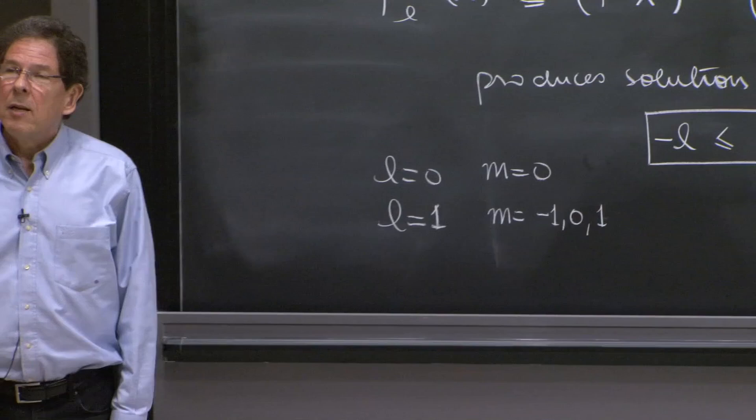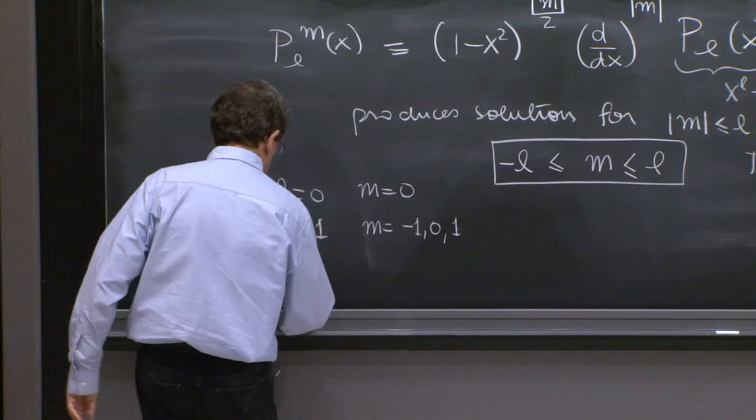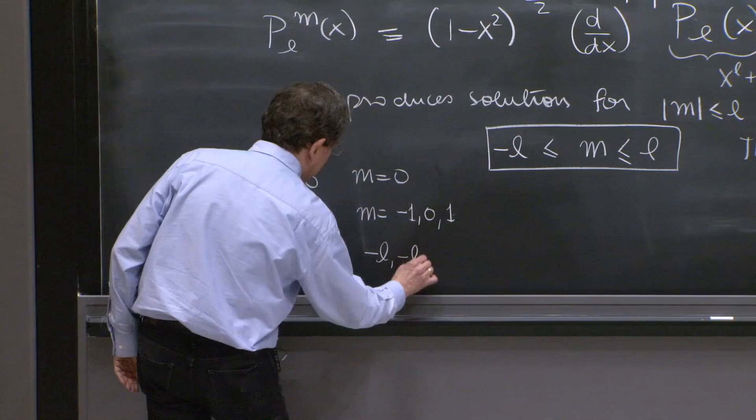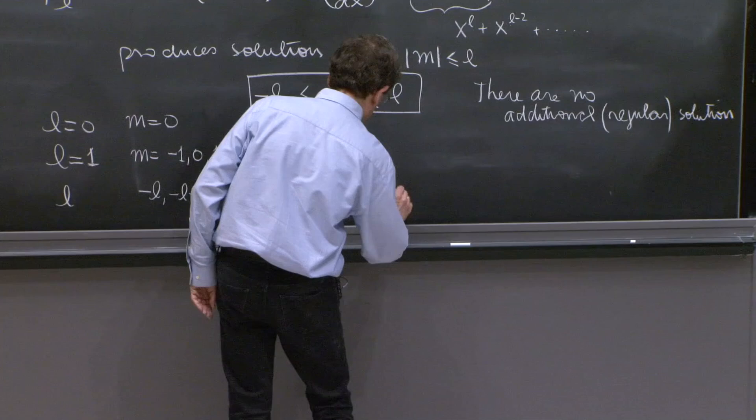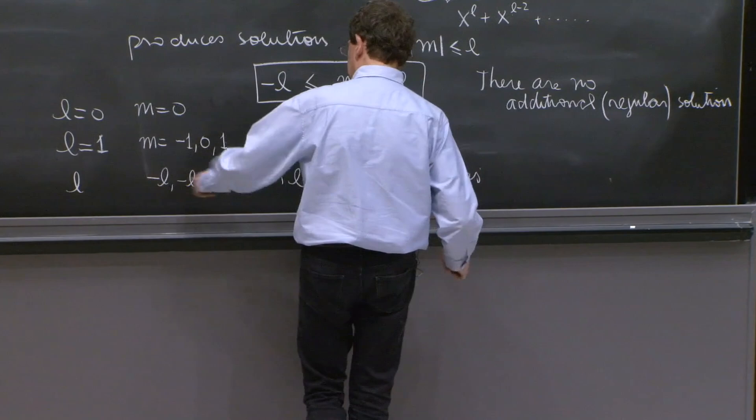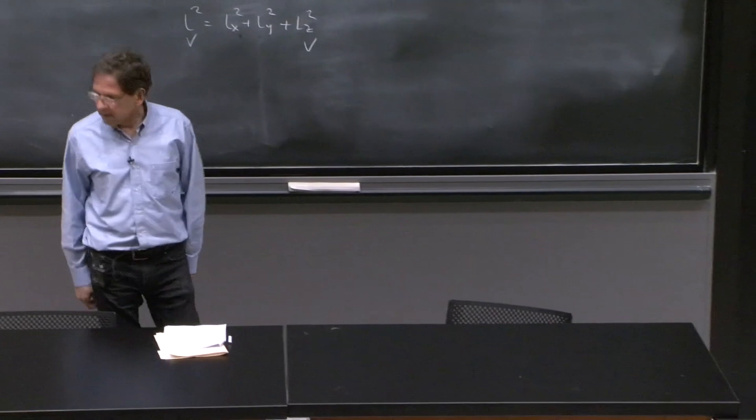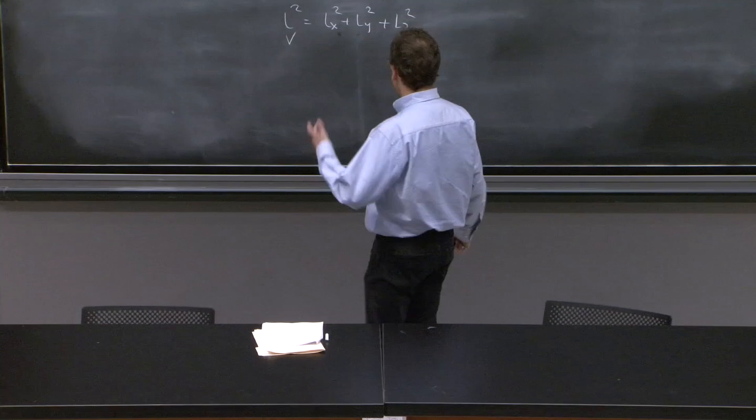So in general, when you choose a general l, you go from, if you choose an arbitrary l, then m goes from minus l minus l plus 1 all the way up to l. Now, these are all the values, which are 2l plus 1 values. 2l and the 0 value in between, so it's 2l plus 1 values. So the quantization, in some sense, is done now.